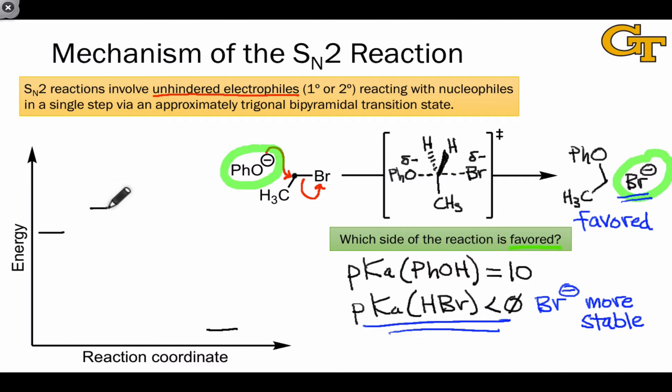And in this case, since the reactants are higher in energy to start with, the transition state will be somewhat closer to the reactants than it is to the products. For example, since we're closer to the reactants, we should expect the bond to bromine to be slightly shorter than the bond to phenoxide.